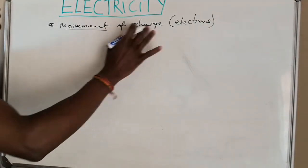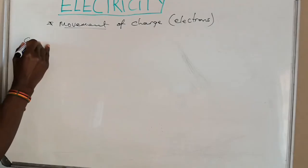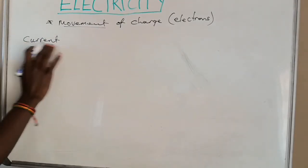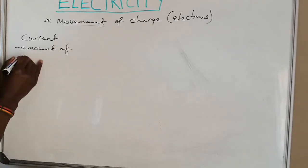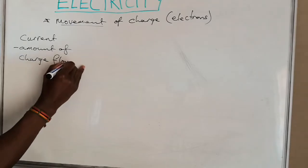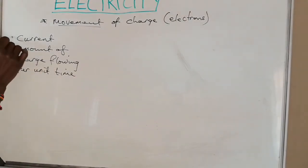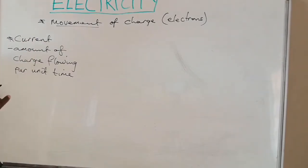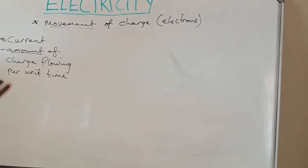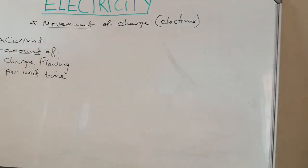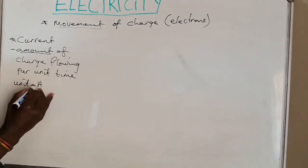So as electrons are moving, or as charge is moving, the first thing in electricity that we need to keep in mind is how much electrons are moving — and that we shall call current. Current is the amount of charge flowing per unit time. Electrons are moving — how many electrons, how much electrons are moving — that is current. We cannot have electricity without knowing how much electrons are moving. Current is measured in a unit called amperes.